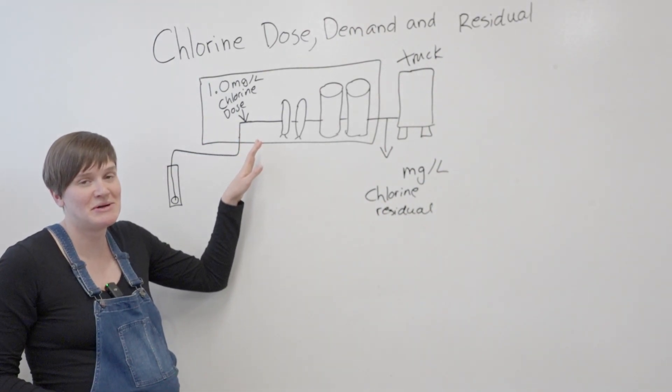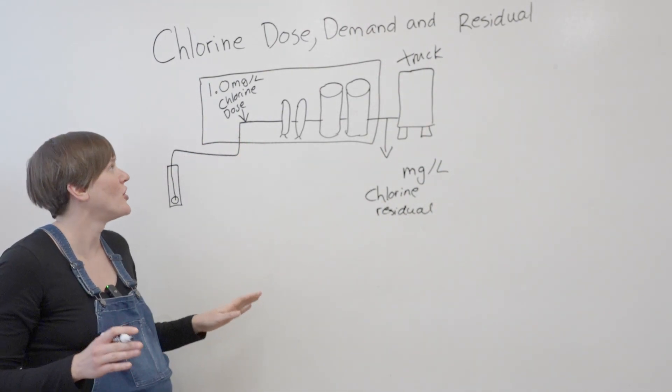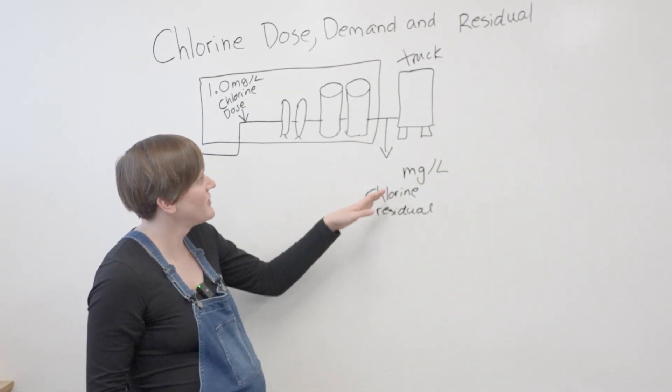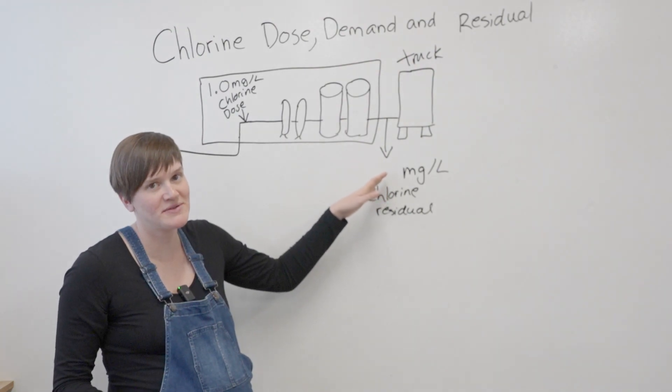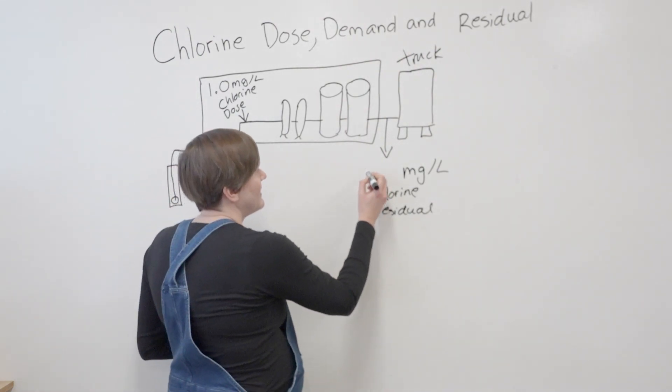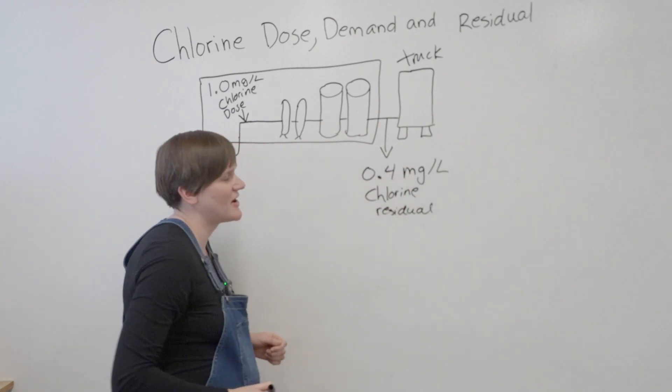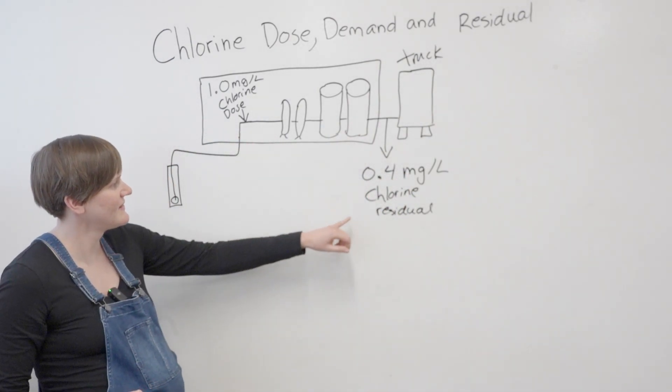This is what your chlorine pumps are programmed to do - they're always going to be dosing one milligram per liter. Now, if you were the operator and you were taking your chlorine residual reading going into the truck, you might find that it has dropped to 0.4 milligrams per liter. This is your residual.